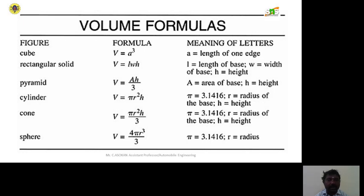And small h equals the height. For a cone, the volume formula is V equal to pi r squared h divided by 3, where pi equals 3.1416 and r equals the radius of the base.